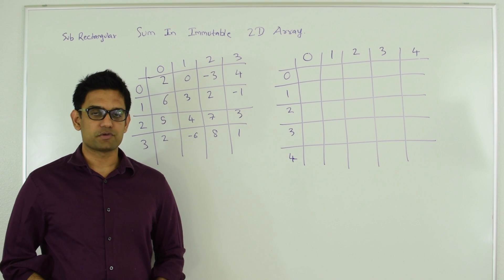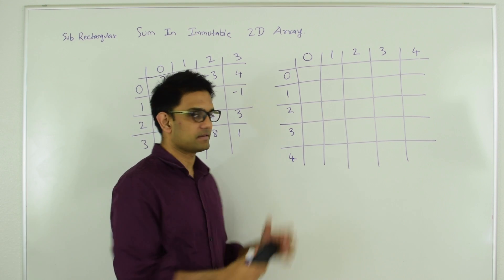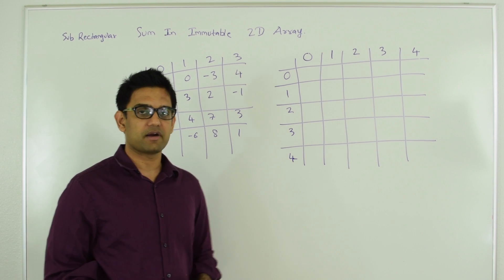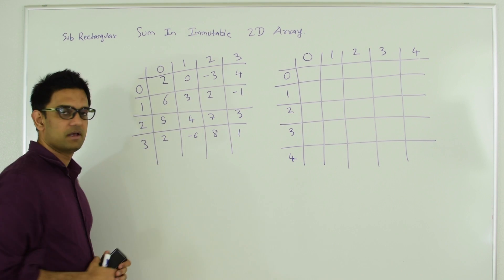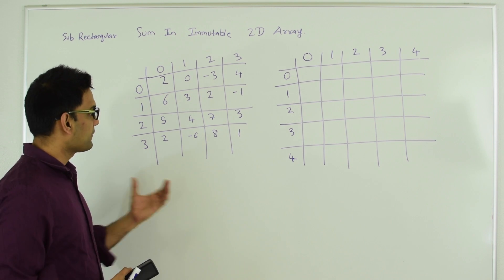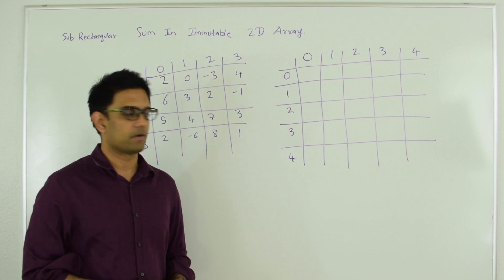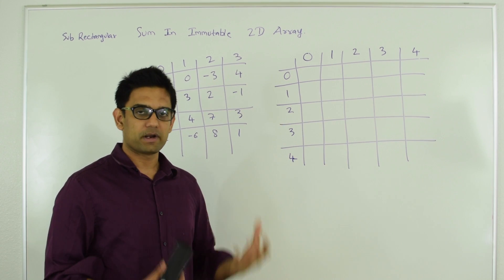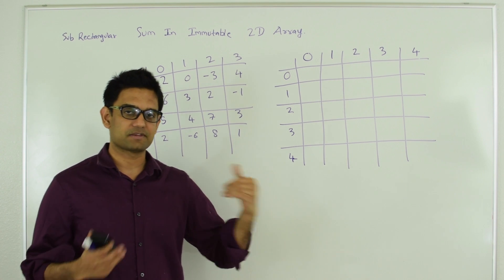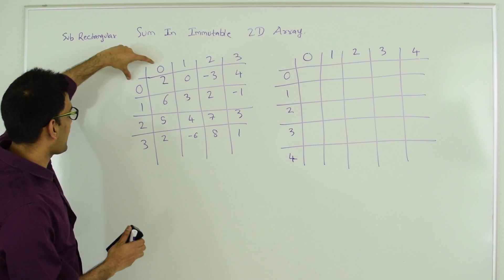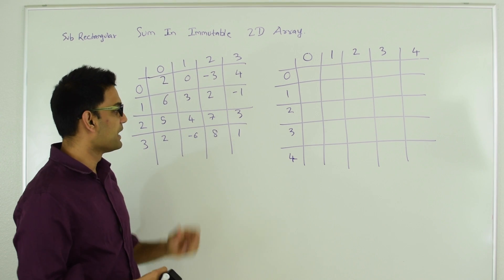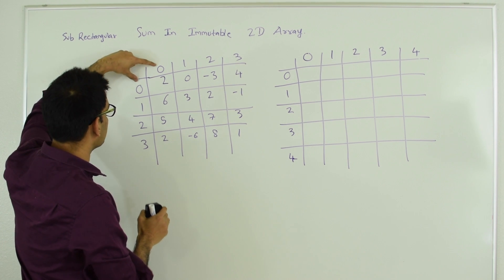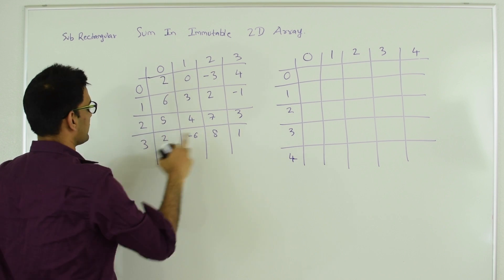The thing with this question is, since the input two-dimensional array is immutable, we can do some upfront work and calculate a result two-dimensional array, and then we can answer each query in constant time. We take a two-dimensional array where the number of rows and number of columns is one more than the original matrix. We have one more row and one more column because it adds simplicity in writing code. For example, position 4,4 stores the sum of the rectangle starting from 0,0 till 3,3. Similarly, 3,2 tracks the sum of the rectangle starting from 0,0 to 2,1.